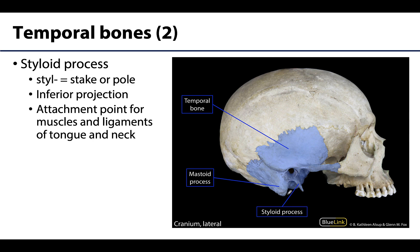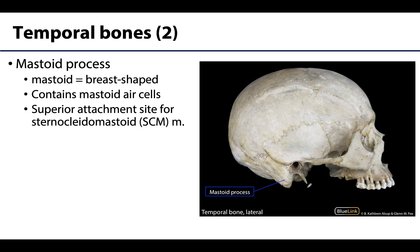Back to the lateral view — two main processes. The first is very thin and stylus-shaped: the styloid process. It's an inferior projection that you can't easily palpate, but it serves as an attachment point for muscles and ligaments of both the tongue and the neck, as well as some ligaments associated with the temporomandibular joint.